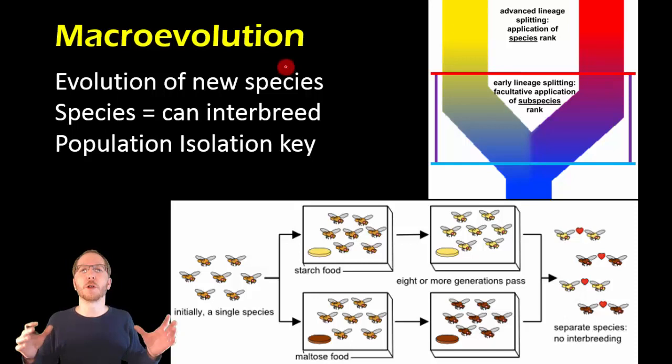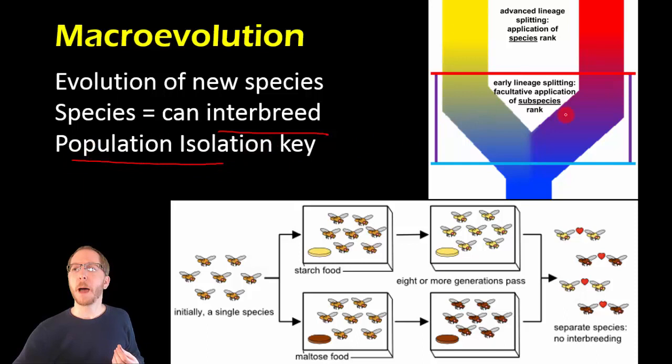In general, the way we determine species is will they, in nature, interbreed with each other successfully. And for us to get new species, the big thing we're going to discuss here is going to be population isolation because if two populations start to diverge, they can each start to undergo their own mutations.